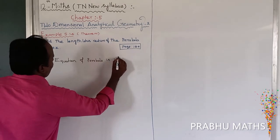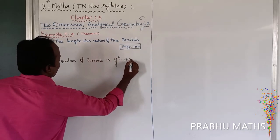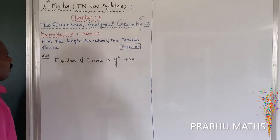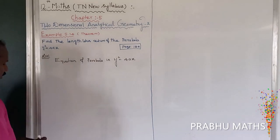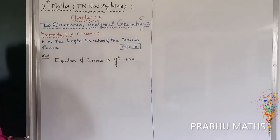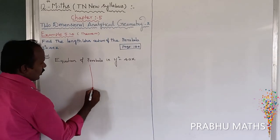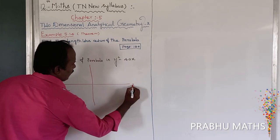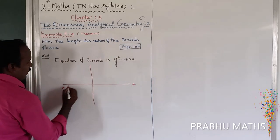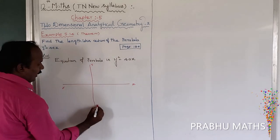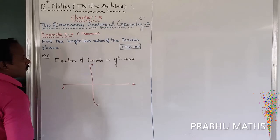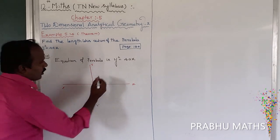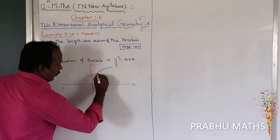The equation of the parabola is y² = 4ax. The diagram shows the x-axis and y-axis with x', y' extensions. This is a rightward open parabola.